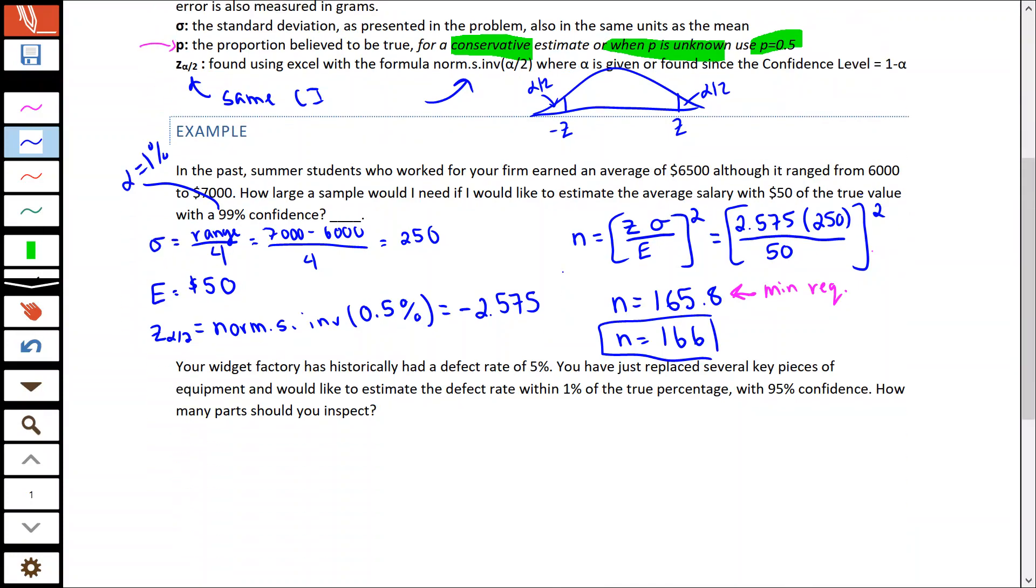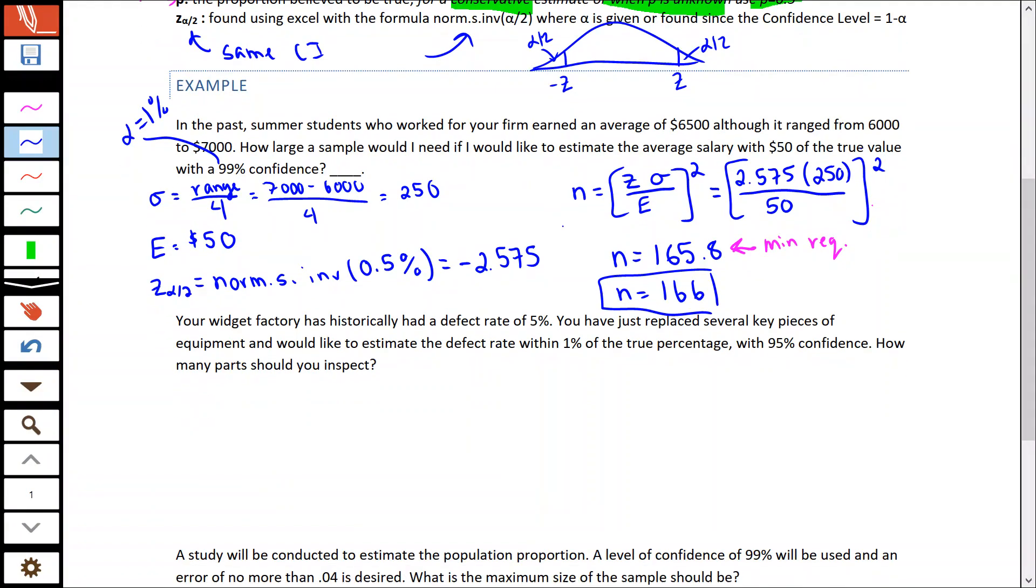The next one says that your widget factory has historically had a defect rate of 5%. You've just replaced several key pieces of equipment and would like to estimate the defect rate within 1% of the true percentage with 95% confidence. How many parts should you inspect? Anytime they're asking us how many people, how many things, how large of a sample, we're talking about sample sizing.